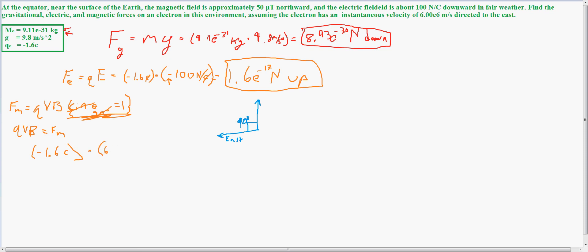Times 6 times 10 to the 6th meters per second, because that is the velocity given in the problem, times 50 times 10 to the negative 6th tesla, which is also given in the problem, which equals